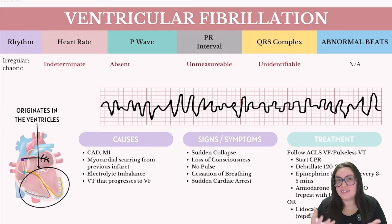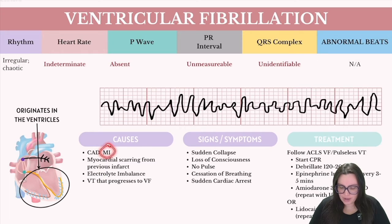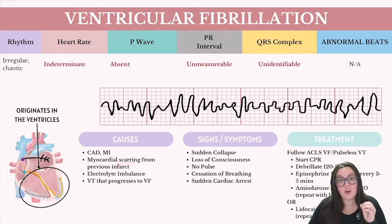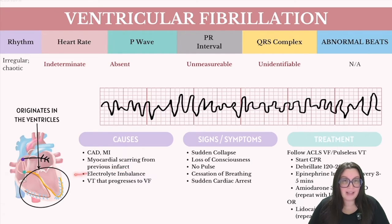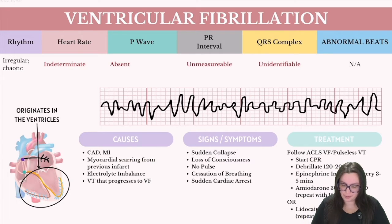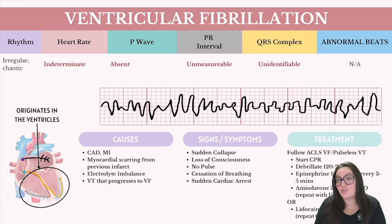Causes behind ventricular fibrillation include CAD, myocardial infarction, and scarring on the heart muscle from previous infarcts. Electrolyte imbalances are huge when looking at lethal rhythms. Additionally, ventricular tachycardia that progresses to ventricular fibrillation can be an additional cause.